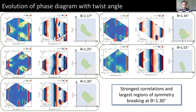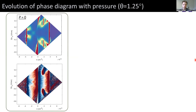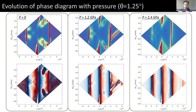We can also tune these correlated states not only with electric field and doping, but with twist angle, mapping this out over a wide range owing to the large tunability the electric field affords. We can also tune these with pressure. Some preliminary work shows that taking a twisted double bilayer graphene sample at 1.25 degrees and applying pressure effectively eliminates the correlated insulating state. We think that with a different twist angle we'd actually be able to strengthen the correlated insulating state, but this is a work in progress.